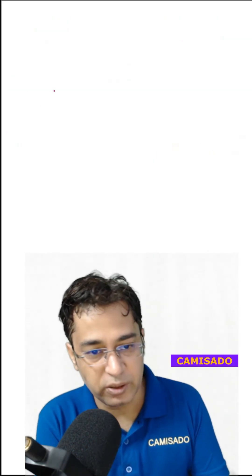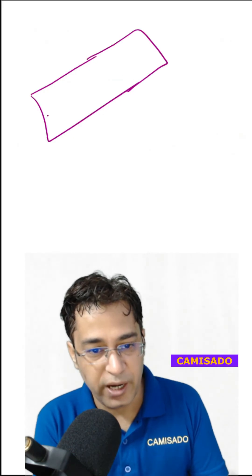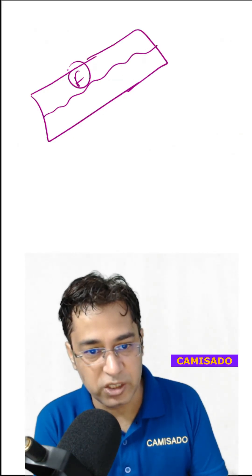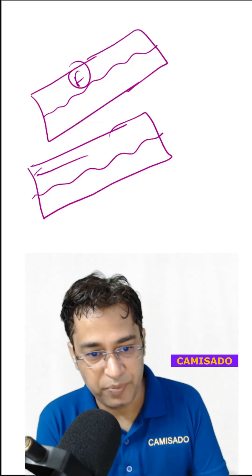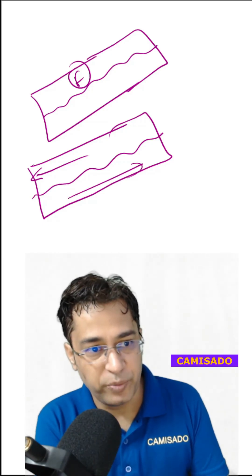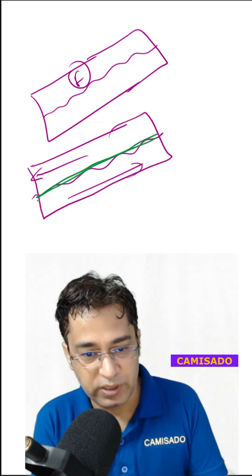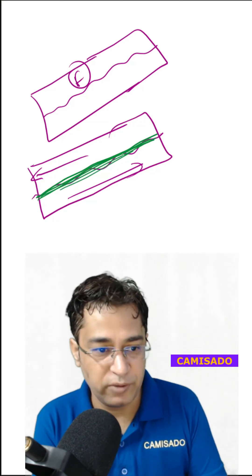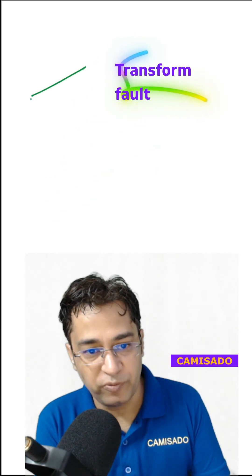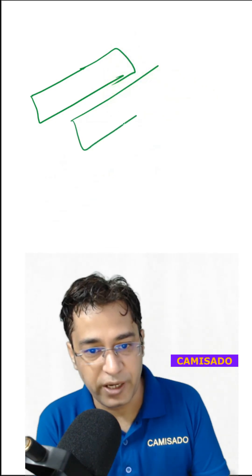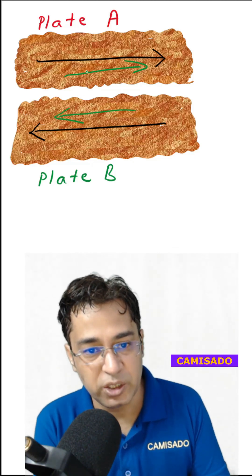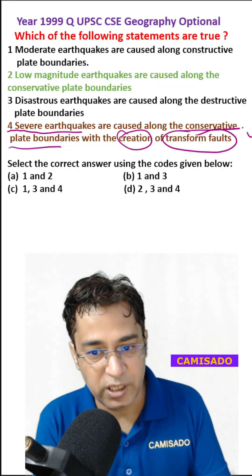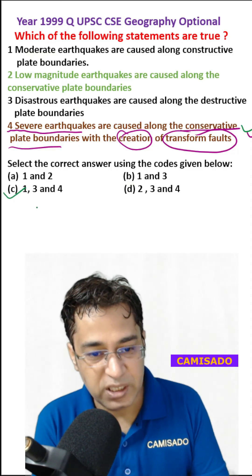The fourth statement says severe earthquakes are caused along conservative plate boundaries with the creation of transform faults — this is absolutely correct. A fracture becomes a fault when there is appreciable movement along it. A transform fault is a fault where the two rocks are just sliding past one another, which is exactly what happens at conservative plate boundaries. Therefore this statement is correct, and the answer is C: statements 1, 3, and 4.